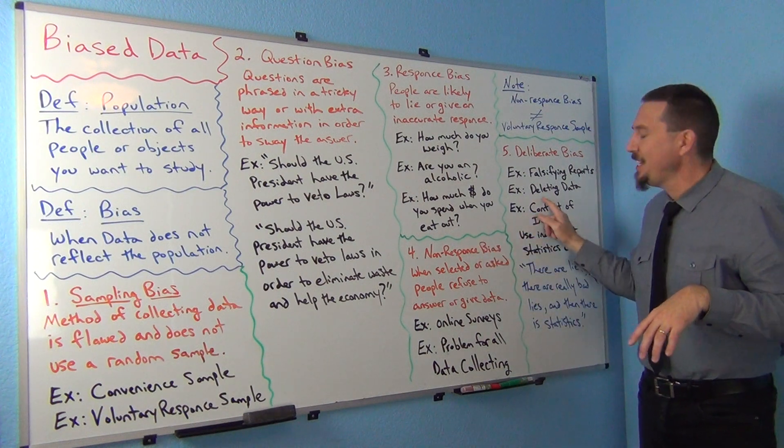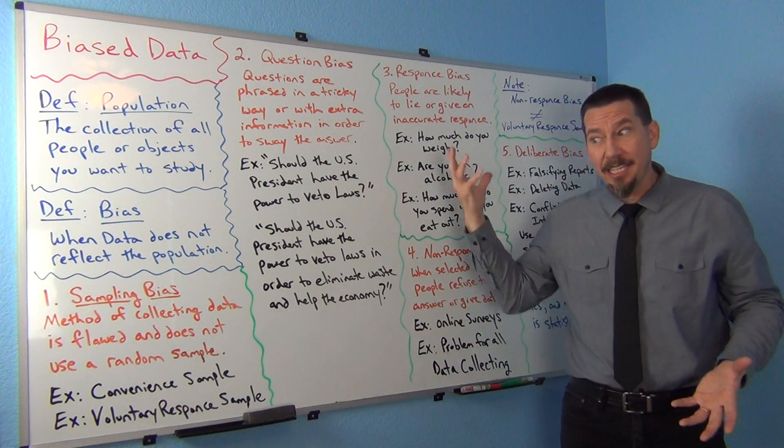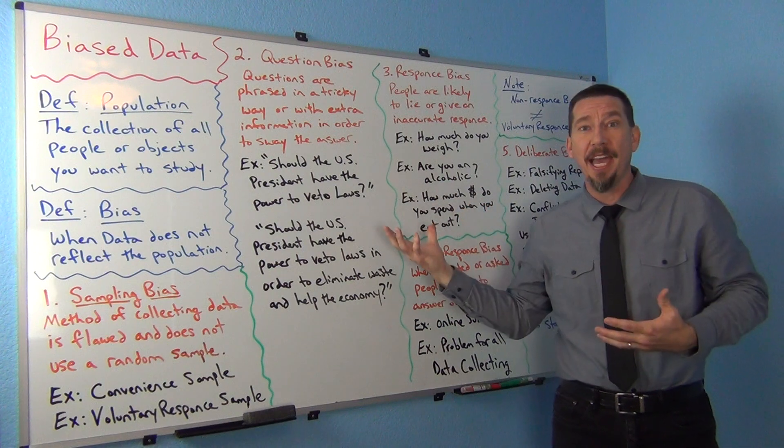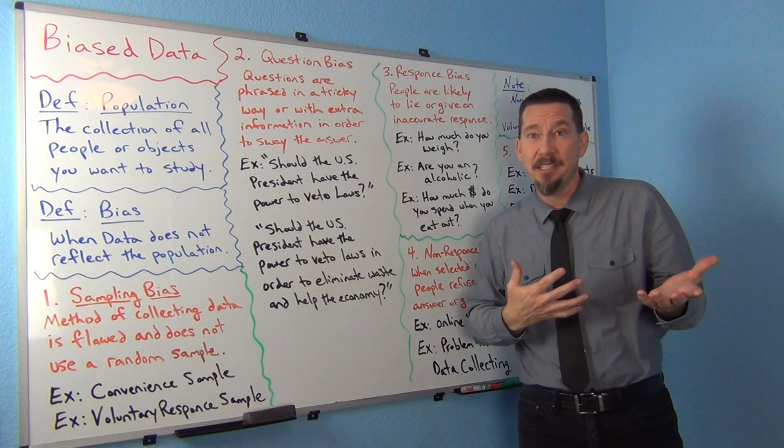So some shady stuff. Now all of a sudden the data is indicating that the business is really well run. No, they just deleted out everybody that said that the business was poorly run. So that becomes a real issue. Again, you could have a random sample, a census, but then somebody deletes out all the data that makes their company look bad. The data is no longer really reflective of what the population really thinks about your business.